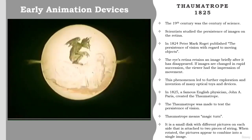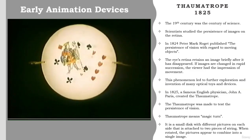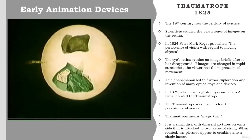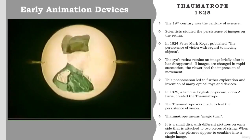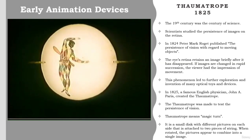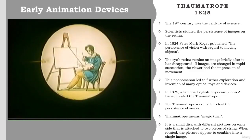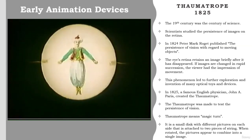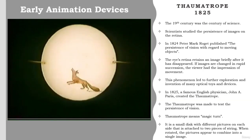In 1825, a famous English physician, John A. Paris, created the thaumatrope. Thaumatrope means 'magic turn.' It is a small disk with different pictures on each side, attached to two pieces of string. When rotated, the pictures appear to combine into a single image. The thaumatrope was made to test the persistence of vision, an optical illusion that tricks the eye into seeing movement long after the movement has stopped. If you are interested in how it works, you can even make one yourself!